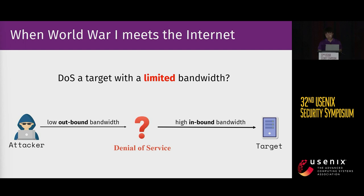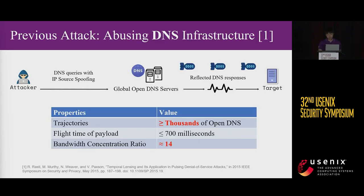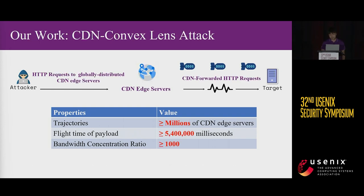From the story, I believe you have already understood the core concept of this tactic. Now let's apply this to the internet. In 2015, Vern Paxson implemented a pulsing DDoS attack by abusing OpenDNS resolvers, achieving a bandwidth concentration ratio of about 40 times. In our work, CDN acts as the artillery, achieving a ratio of over 1,000 times.